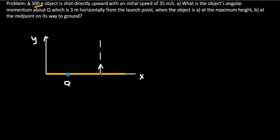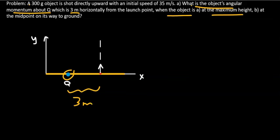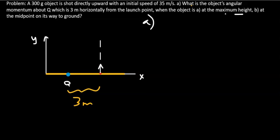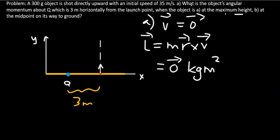Problem 2: A 300-gram object is shot directly upward with an initial speed of 35 m/s. What is the object's angular momentum about point Q, which is 3 meters horizontally from the launch point, when the object is at maximum height? Part A is simple: at maximum height the velocity is zero, so the angular momentum is m times (r × v) = 0 kg·m²/s.